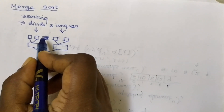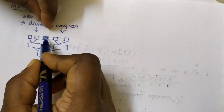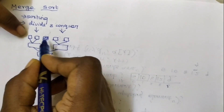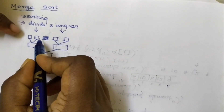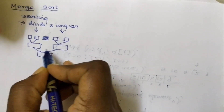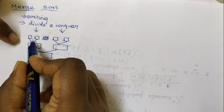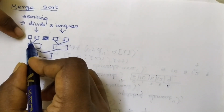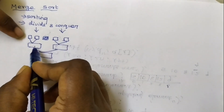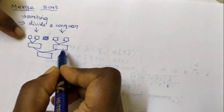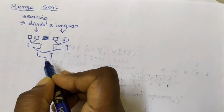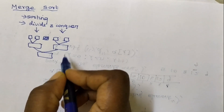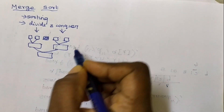We divide the complete array into two halves, and continue dividing those halves — this is the divide and conquer approach of merge sort.